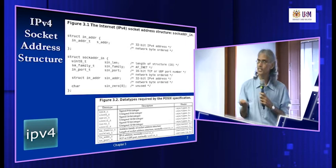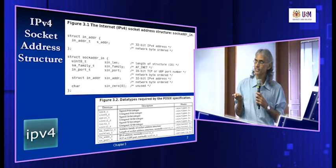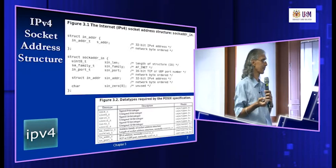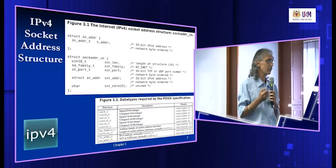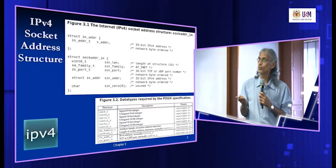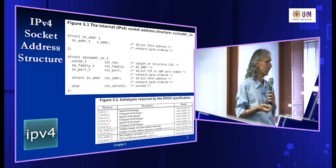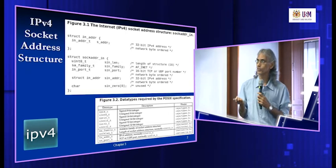The fifth element is 8 unused bytes, all zeros. Altogether, there are 16 bytes in the socket structure. Each time we use the socket, we work with the first four components.